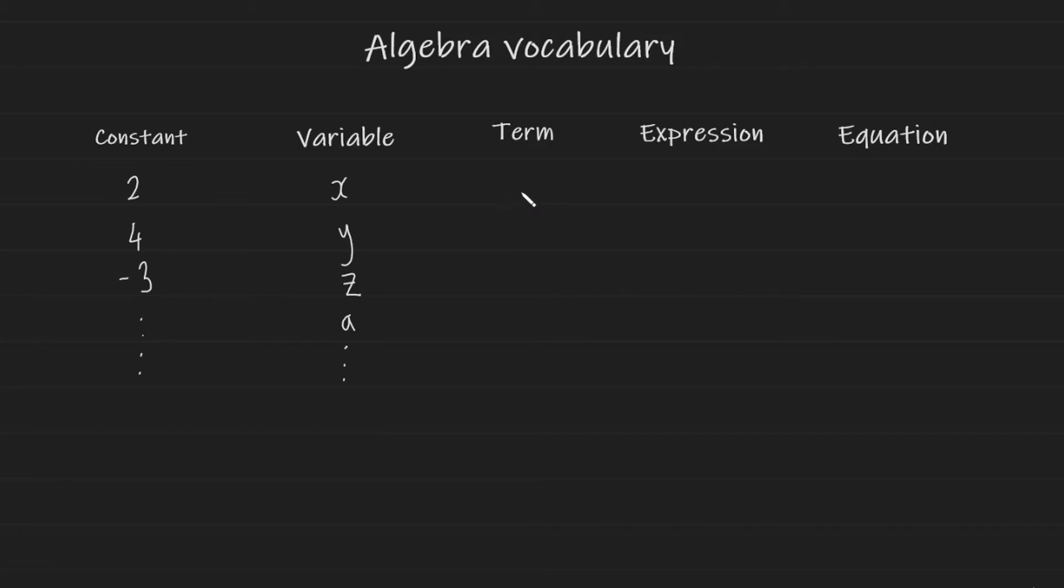Now let's look at a term. A term can be a constant or a variable or the multiplication of both. Of course, you can have negative versions of them as well, so don't forget that.